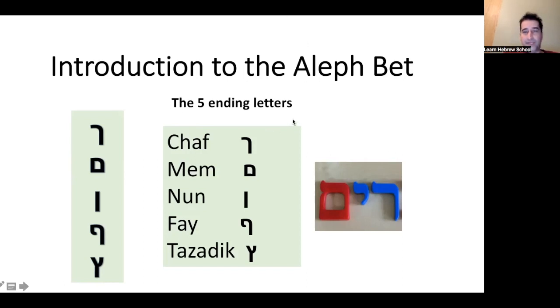We have five of those in Hebrew: chaf sofit, mem sofit, nun sofit, fey sofit, and tzadik sofit.